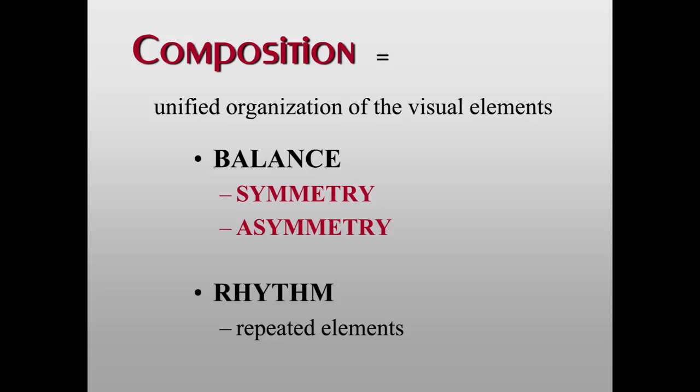Sometimes artists use the name 'composition' as the title of their artwork, particularly in 20th century and contemporary art. Sometimes artists will just say, 'this is composition number one, two, three, four' — particularly with works that have no subject matter from the visible world, works that are non-objective or non-representational. But all works of art have an arrangement of the visual elements, a composition.